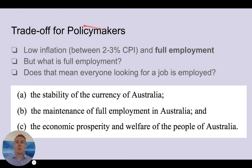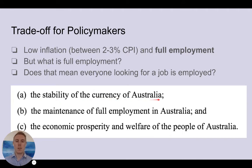There's a trade-off for policymakers here. We want to achieve low inflation — between two and three percent CPI — which is one of the RBA's first goals from the Reserve Bank Act: to maintain the stability of the currency of Australia. So they want low inflation, and they also want the maintenance of full employment. But what is full employment? Does that mean everyone looking for a job is employed? No — that's what we're going to see.